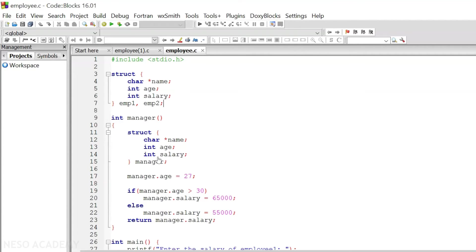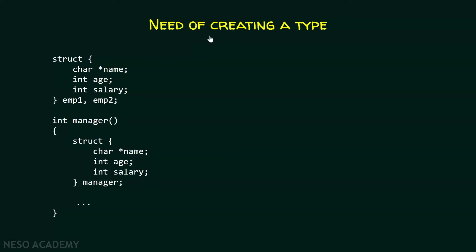Now after seeing this code, it is clear how to declare a structure within a local scope. We have seen this code already where one structure is declared in the global scope and one structure is declared within the local scope. We can also see clearly that there is redundancy in the code. If the manager variable is to be declared here there is no problem, but if we want a variable to be declared in the local scope, then we have to redeclare the whole structure within that particular function — this structure has to be written once again within this function, just for the sake of the manager variable. But this is quite cumbersome.